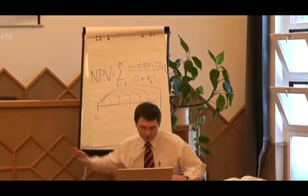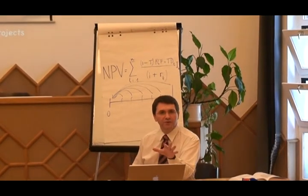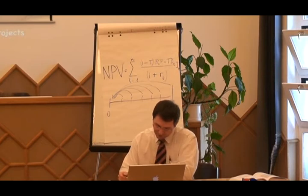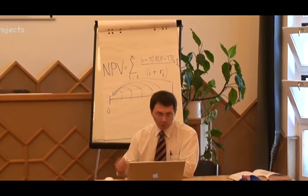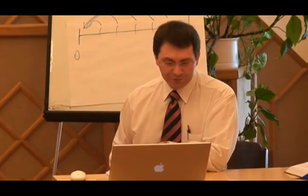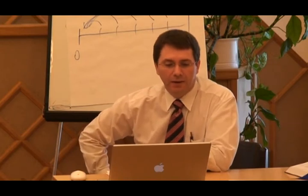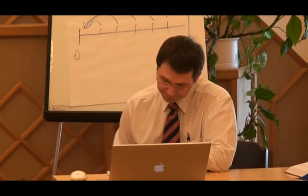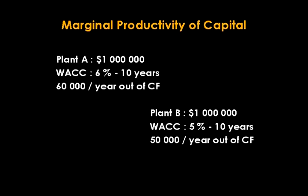Marginal productivity would be defined as the productivity of the last piece of equipment that can be employed without incurring a loss — which is under the yellow line. So Project A and B can be employed; C and D you would incur a loss. Another important point here is that the cut-off point is not rigid.